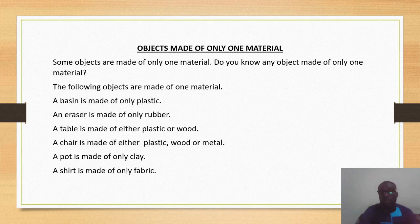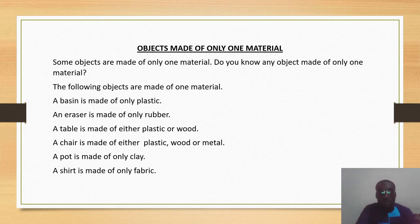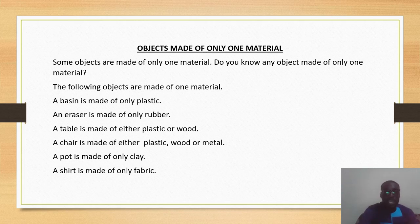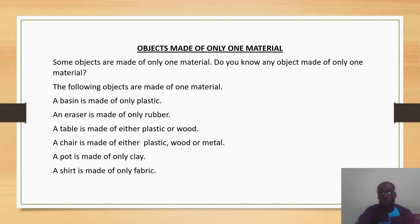Some objects are made of only one material. A basin is made of plastic. An eraser is made of only rubber. A table is either made of plastic or wood. A chair is made of either plastic, wood, or metal. A pot is made of clay. A shed is also made of fabric.